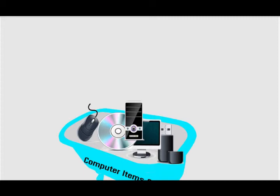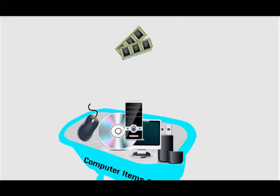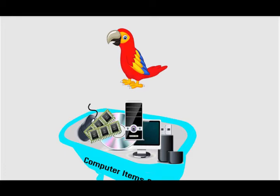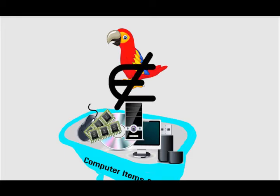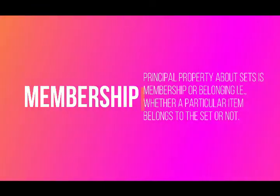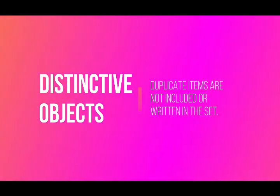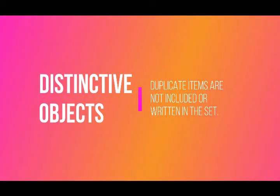Now if I am given a new item like a RAM chip and I want to check whether it belongs to the above created class — since it is a computer item, it belongs to this class. This belonging is mathematically denoted with the element-of symbol. Similarly, another new item, for example a pigeon, does not belong to this class, which is mathematically denoted with the not-element-of symbol. So the principal property about sets is membership or belonging — whether a particular item belongs to the set or not. Another important principle is the distinctive nature of objects: duplicate items are not included or written in the set again.